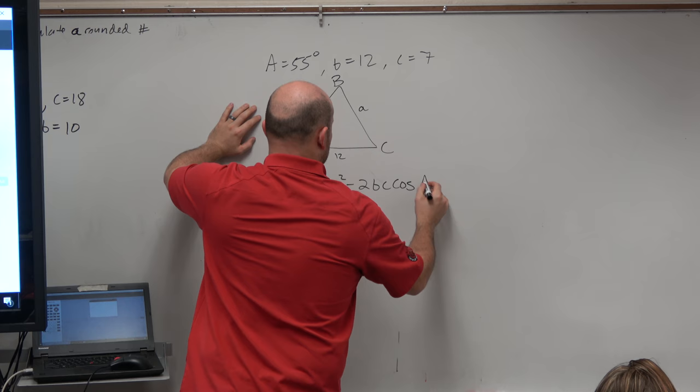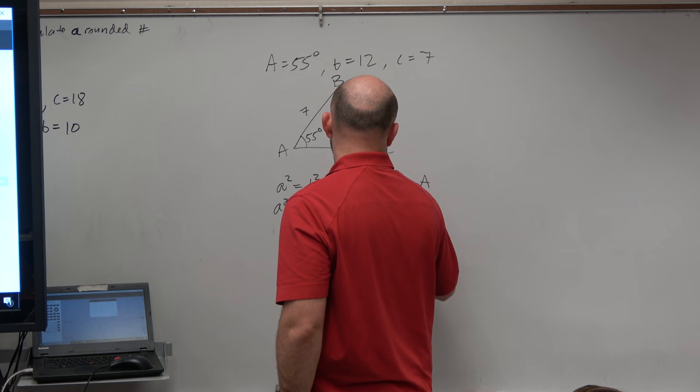So a squared equals b squared, which is 12 squared, plus c squared, which is 7 squared, minus 2 times 7 times 12 times the cosine of 55 degrees.